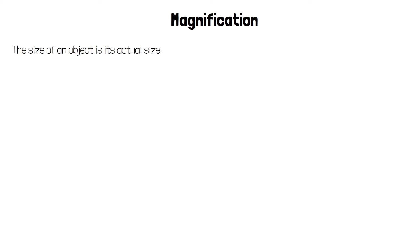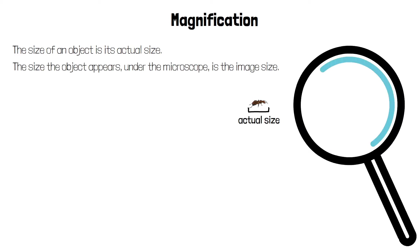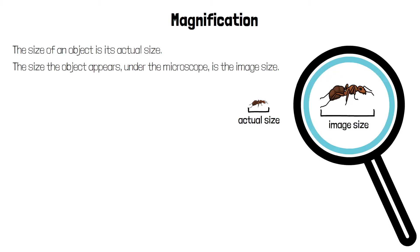The second way to calculate magnification is to look at the actual and image size of an object. The actual size is the real size of an object. The image size is the size that the object appears after it's been magnified. To find the total magnification we use the equation: magnification equals image size over actual size.